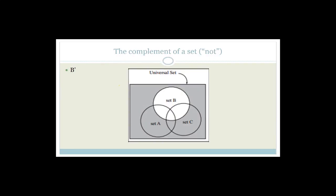Now let's talk about the complement of a set. The complement means 'not'. So if we're looking at not B, the dark gray here is not B. Everything that's not in B is the complement of B.